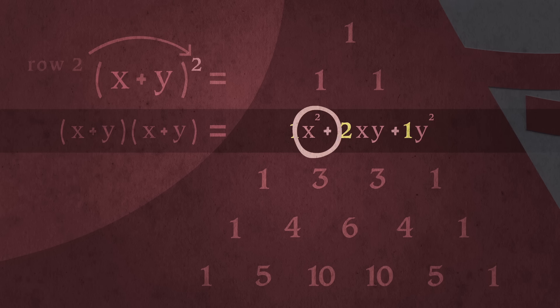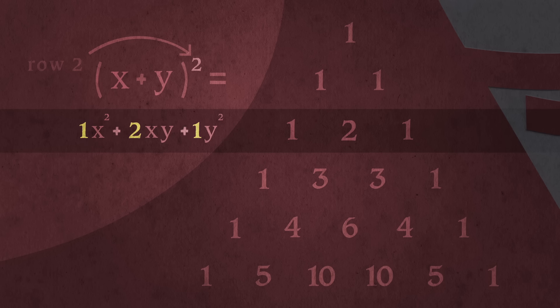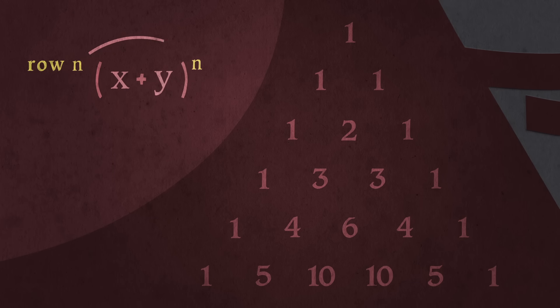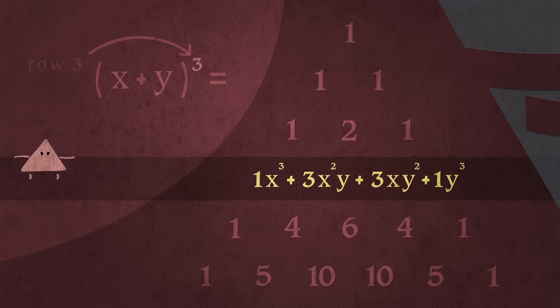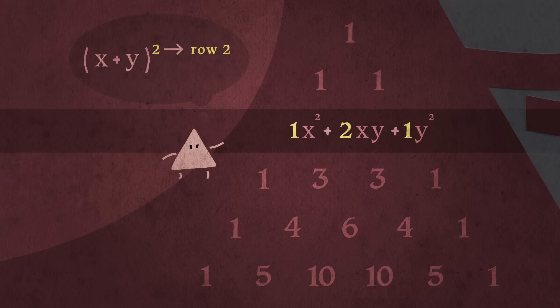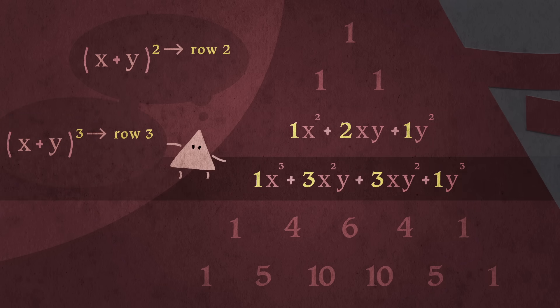The coefficients, or numbers in front of the variables, are the same as the numbers in that row of Pascal's Triangle. You'll see the same thing with n equals 3, which expands to this. So the triangle is a quick and easy way to look up all of these coefficients.